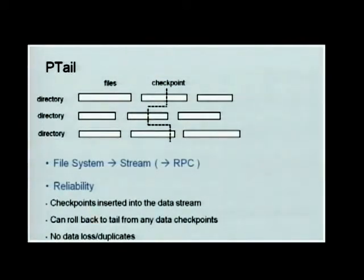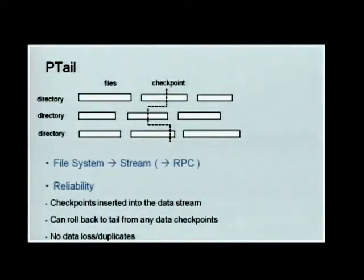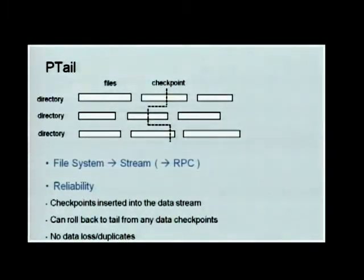The reliability of PTail is guaranteed by using checkpoints — the checkpoint is the name of the file as well as the file offset in each directory. We record all the file offsets together as a checkpoint. With checkpoints, we can roll back to tail from any previous position. When an application crashes, we just load the checkpoint again from persistent storage, and we'll be able to tail the data again without any loss or duplicates.